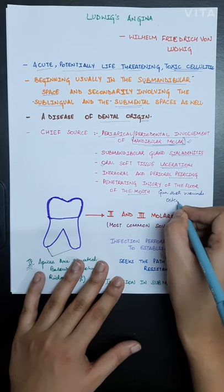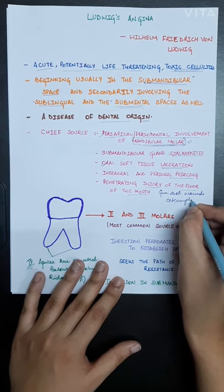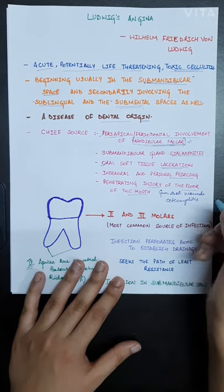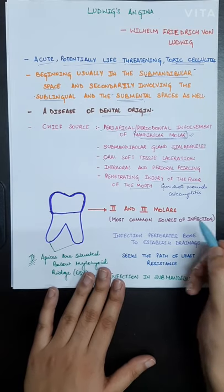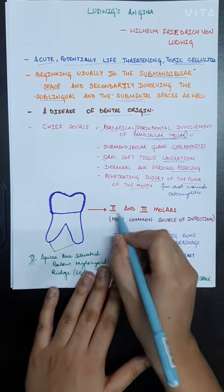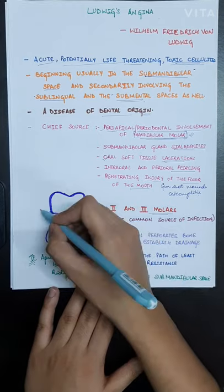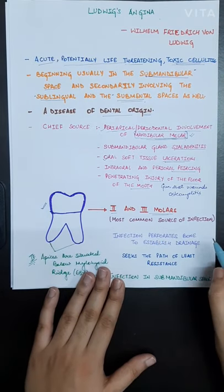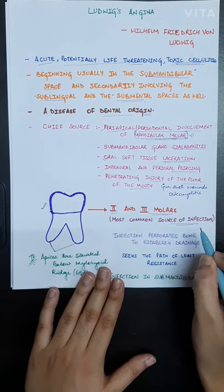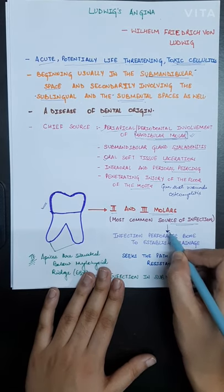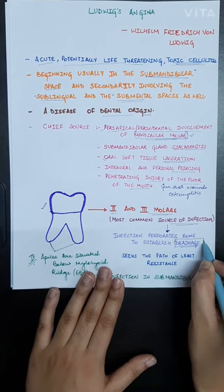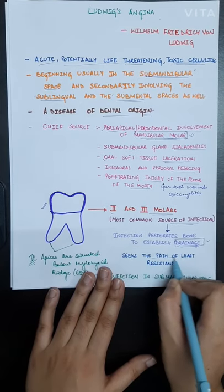The most common source of infection are mandibular second and third molars. Molars are the source of infection because the infection perforates the bone to establish drainage, and that infection seeks the path of least resistance.